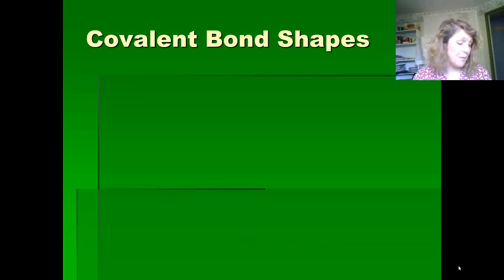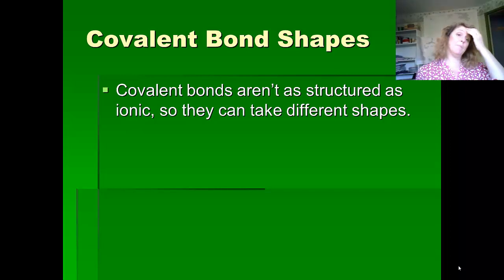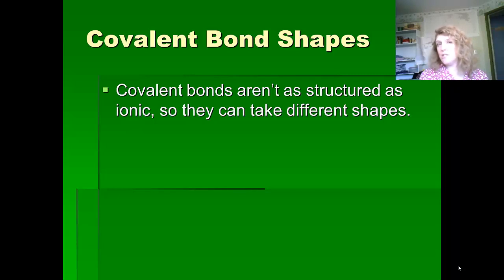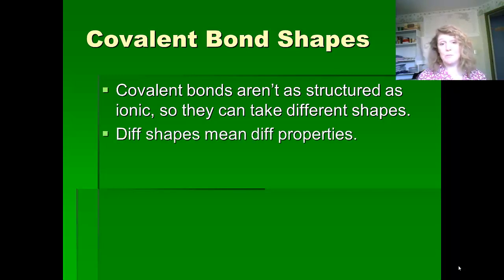The bond shapes are interesting. The covalent bonds aren't as structured as the ionic bonds, so they can take different shapes. And you can actually use this to your advantage sometimes, because the different shapes mean different properties, and we're going to use carbon as an example.